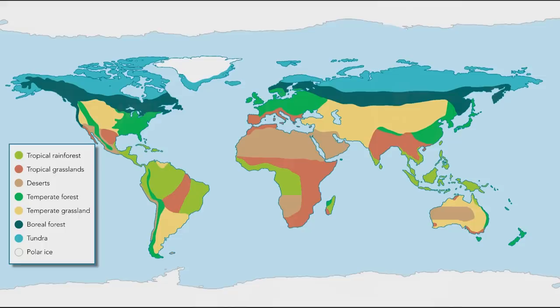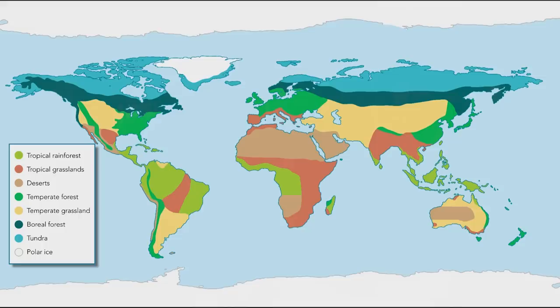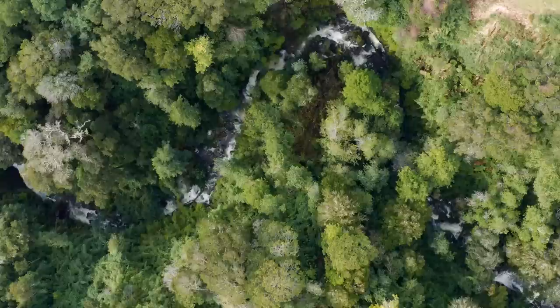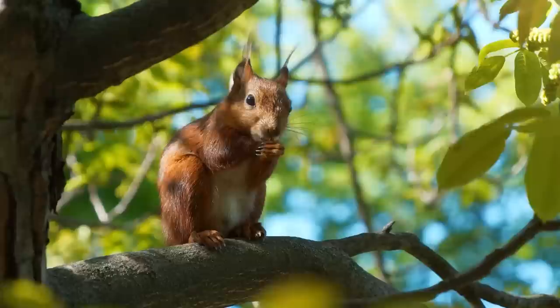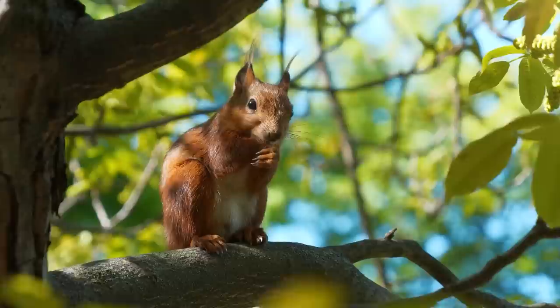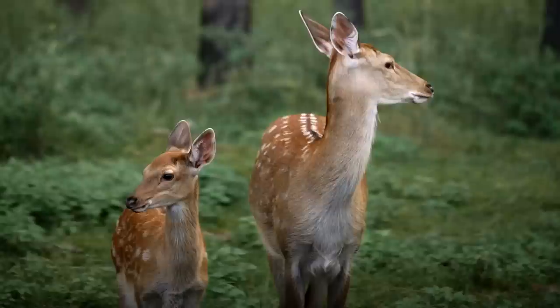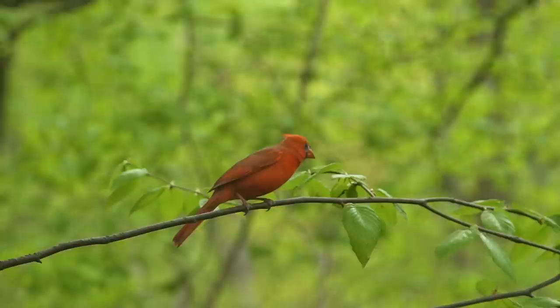Temperate forests are found in locations that have mild winters and cool summers. These forests are dominated by trees that lose their leaves in fall each year, although there are also some evergreen trees. The temperate forest is home to a wide variety of animals, including squirrels, deer, bears, and birds.